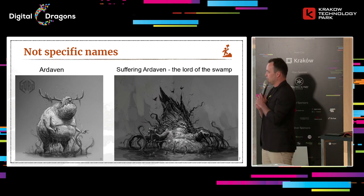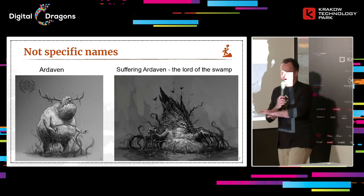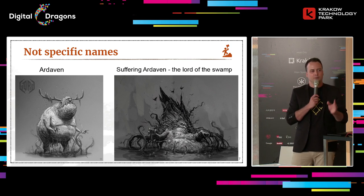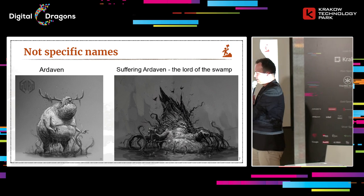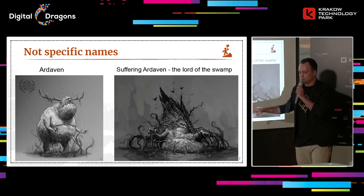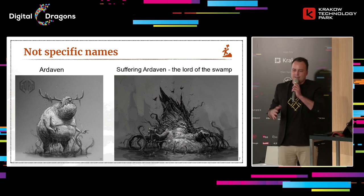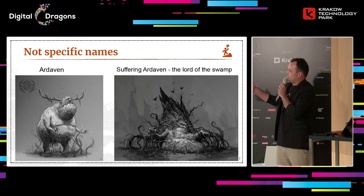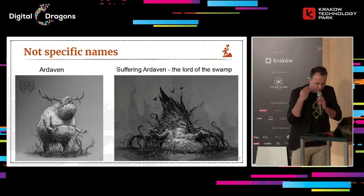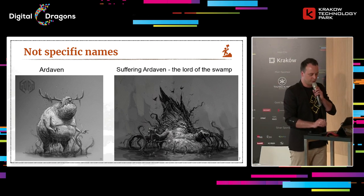Not specific names: we created a monster called Arduans from Slavic mythology. The first concept art result I got — even though I'd provided a lot of information to the concept artist — all of it was neglected and he produced something that wasn't quite what I was going for. So I changed the name to 'Suffering Erdogan, the Lord of the Swamp,' and immediately the next concept art looked completely different. The change wasn't only the name — I provided more feedback — but the name was the main thing that directed the person to something more specific, giving them a totally different way of thinking about it.